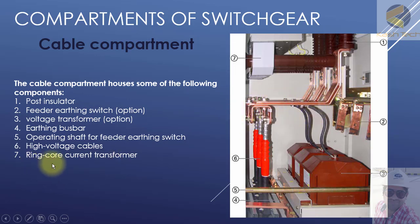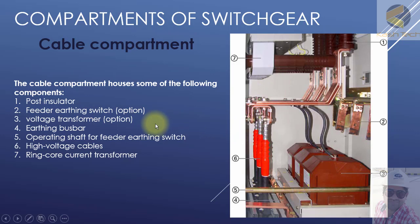Number seven is the ring core current transformers. Here you can see the ring core current transformers, and you can also see the secondary winding of the current transformers. These are the parts of the cable compartment. I hope you enjoyed this lecture, thank you very much.